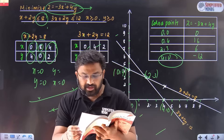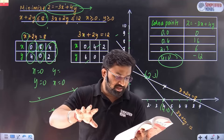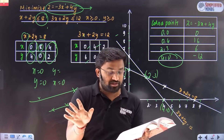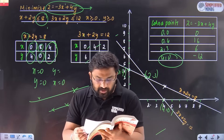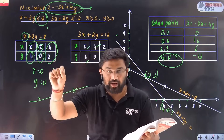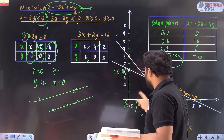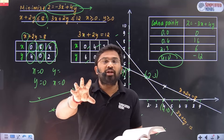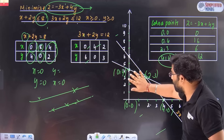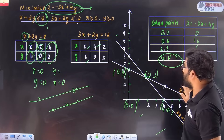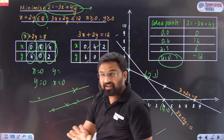The feasible region is the common region determined by all the constraints including non-negative constraints (x ≥ 0, y ≥ 0). Feasible solutions are points within or on the boundary of this region. Infeasible solutions are points outside the feasible region. You just need to be ready for both definitions.